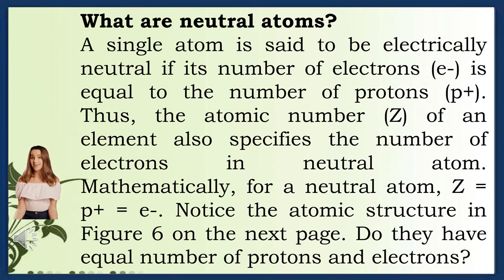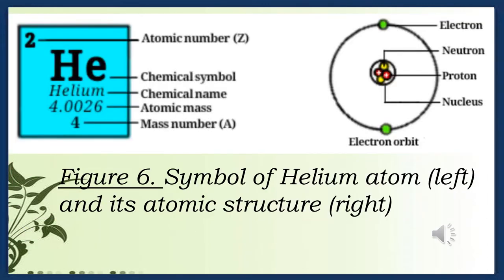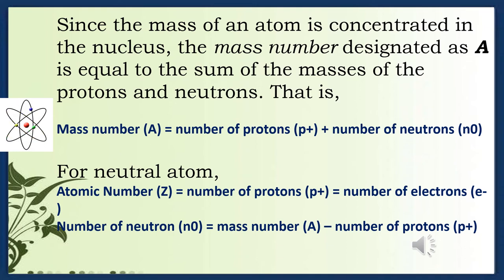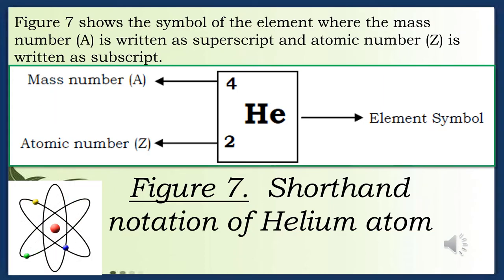Notice the atomic structure in figure 6 — helium atom symbol on the left, atomic structure on the right. Since the mass of an atom is concentrated in the nucleus, mass number A equals the sum of the masses of the protons and neutrons: A = p⁺ + n⁰. For a neutral atom: atomic number Z = number of protons p⁺ = number of electrons e⁻. Number of neutrons n⁰ = mass number A minus number of protons. Figure 7 shows the shorthand notation: mass number A as superscript, atomic number Z as subscript. For helium: A is 4, element symbol He, atomic number Z is 2.